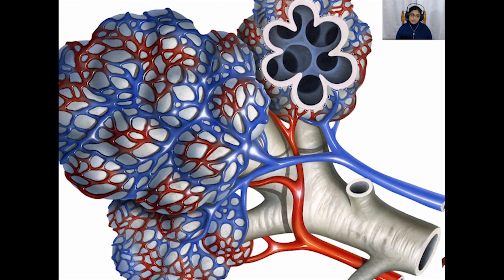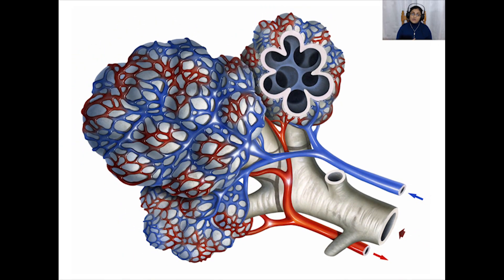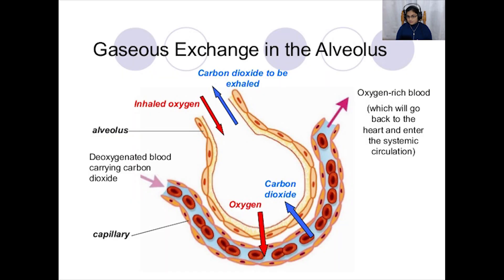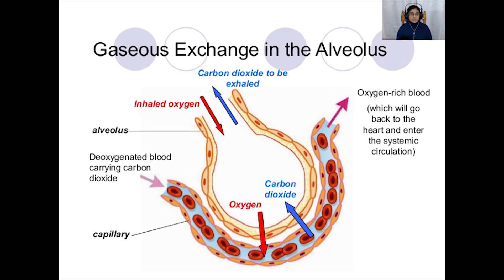Viewed through a high-powered microscope, the alveoli look like a bunch of grapes and are covered with tiny blood capillaries. Blood is pumped from the heart to the lungs and passes through the capillaries around the alveoli. This blood has come from the respiring tissues of the body, where it has given up some of its oxygen to the cells and gained carbon dioxide. Carbon dioxide is a waste product that can be toxic if accumulated, so it needs to be removed. Around the lungs, the blood is separated from the air inside each alveolus by only two cell layers: the cells making up the wall of the alveolus and the capillary wall itself.